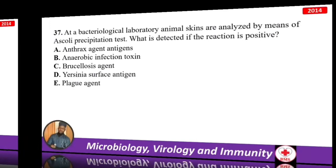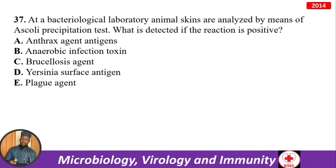A bacteriological laboratory analyzes animal skins by means of Ascoli's precipitation reaction. What is detected if the reaction is positive? As I mentioned, the precipitation reaction is used for testing hides and meat — in this case you will find anthrax agent antigens.